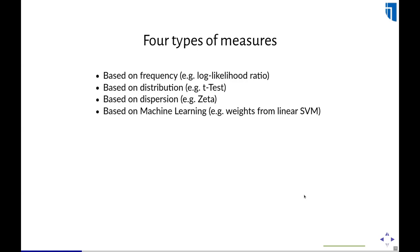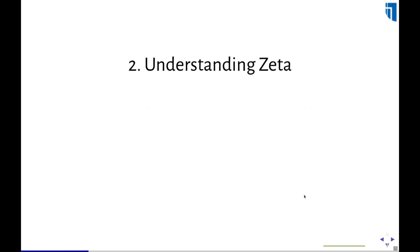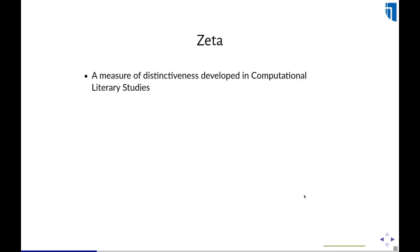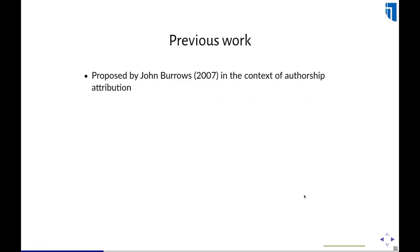Now we can dive into Zeta. These are two recommended readings, also listed at the end of the slides, if you're interested in the different types of measures, how to evaluate them, and the role of dispersion. Zeta is a measure of distinctiveness developed in computational literary studies by John Burrows. It's based on the dispersion of features rather than pure frequency, has a bias towards medium-frequency content words making results highly interpretable, and interestingly is ignored by virtually all relevant work in computational linguistics — there's simply a rift between the communities.